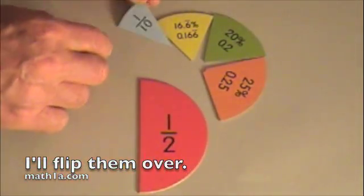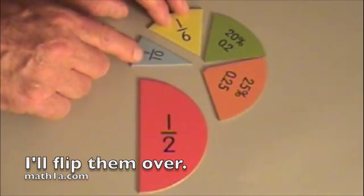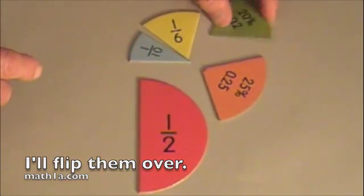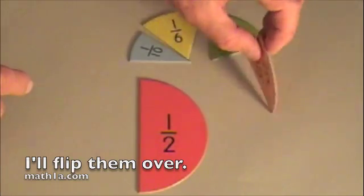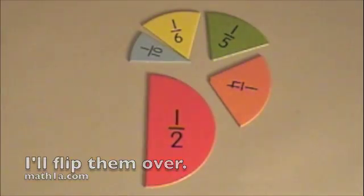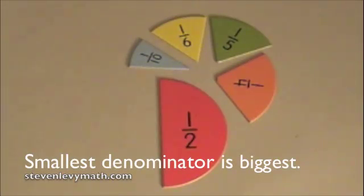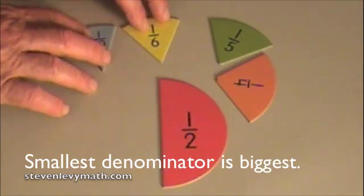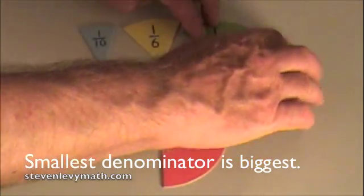Let's flip them over now and see what else we get. Curious. As the pieces get bigger, the denominator gets smaller. So the biggest piece has the smallest denominator. And we'll put them in order to make it nice and pretty.